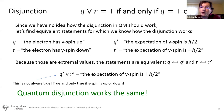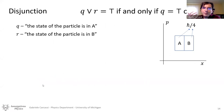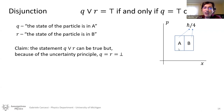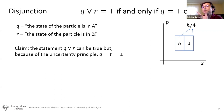Another way people argue that the quantum disjunction does not work is using the uncertainty principle. We have the plane of position and momentum, and we divide two cells each of side ℏ/4, such that together they form the bound of the uncertainty principle. You can say Q or R could be true, but because of the uncertainty principle, Q — the state of the particle is in A — or R — the state of the particle is in B — must be false because it does not satisfy the uncertainty principle.